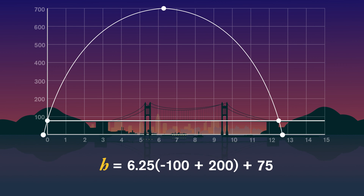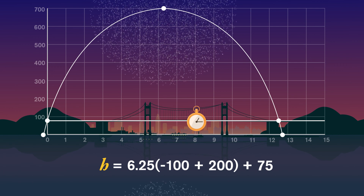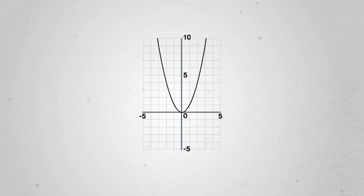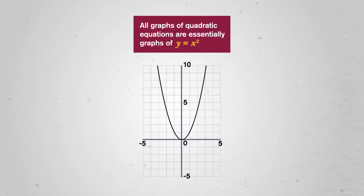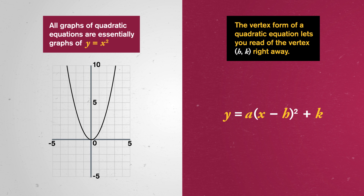If we extend our sketch, the parabola's arms will cross the horizontal axis when h equals zero, at the roots. The positive root is somewhere between t equals 12 and t equals 13. So the graph tells us that your fuse needs to be set so the fireworks go off up to 6.25 seconds, when they're 700 feet up in the air, and will be back on Earth just before 13 seconds are up. All graphs of quadratic equations are essentially just graphs of y equals x squared, just flattened or widened or shifted around, and the vertex form of a quadratic equation lets you read off the vertex h, k right away.